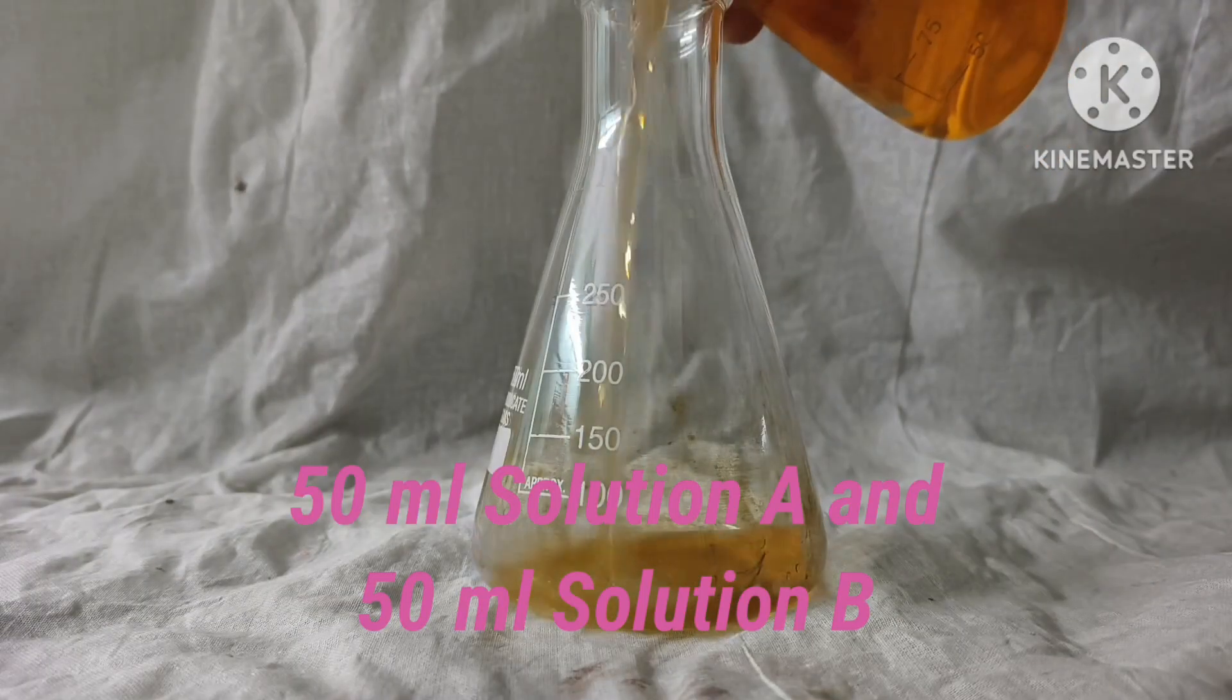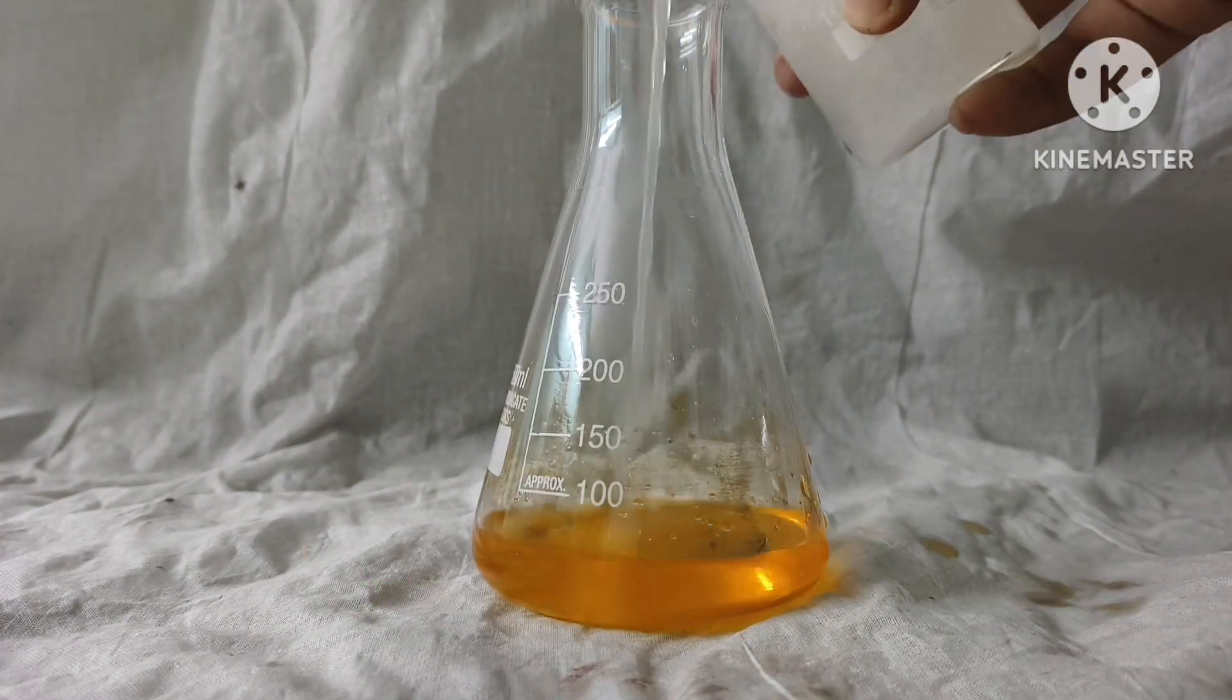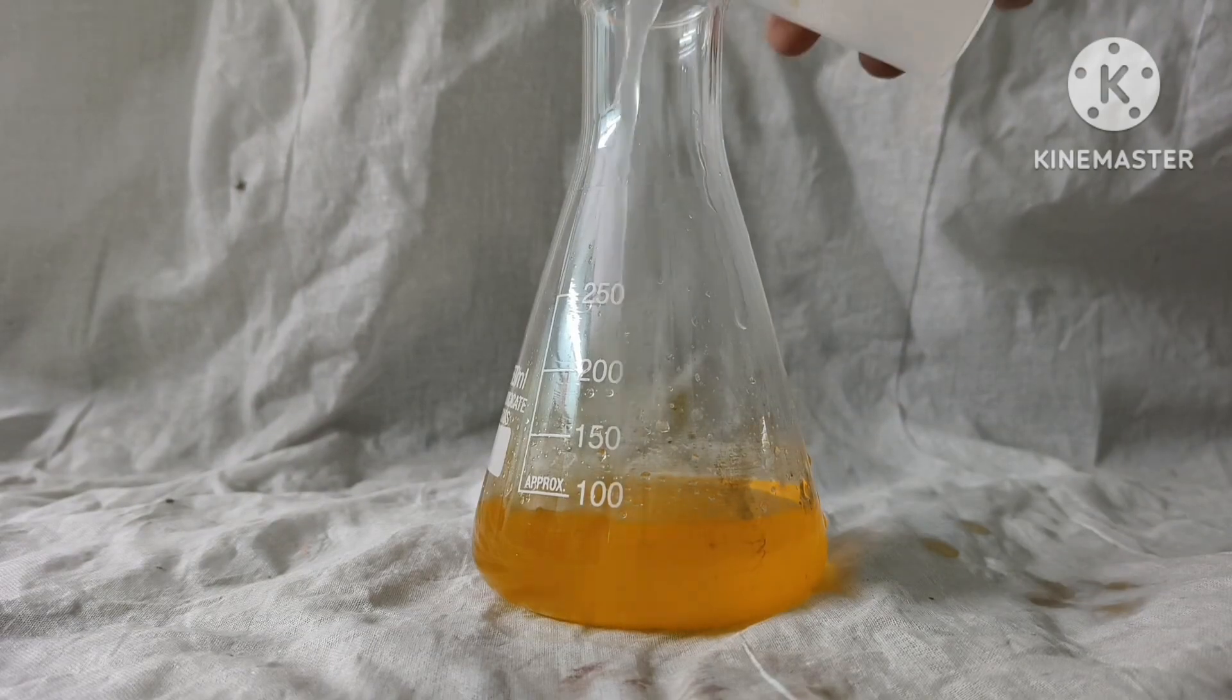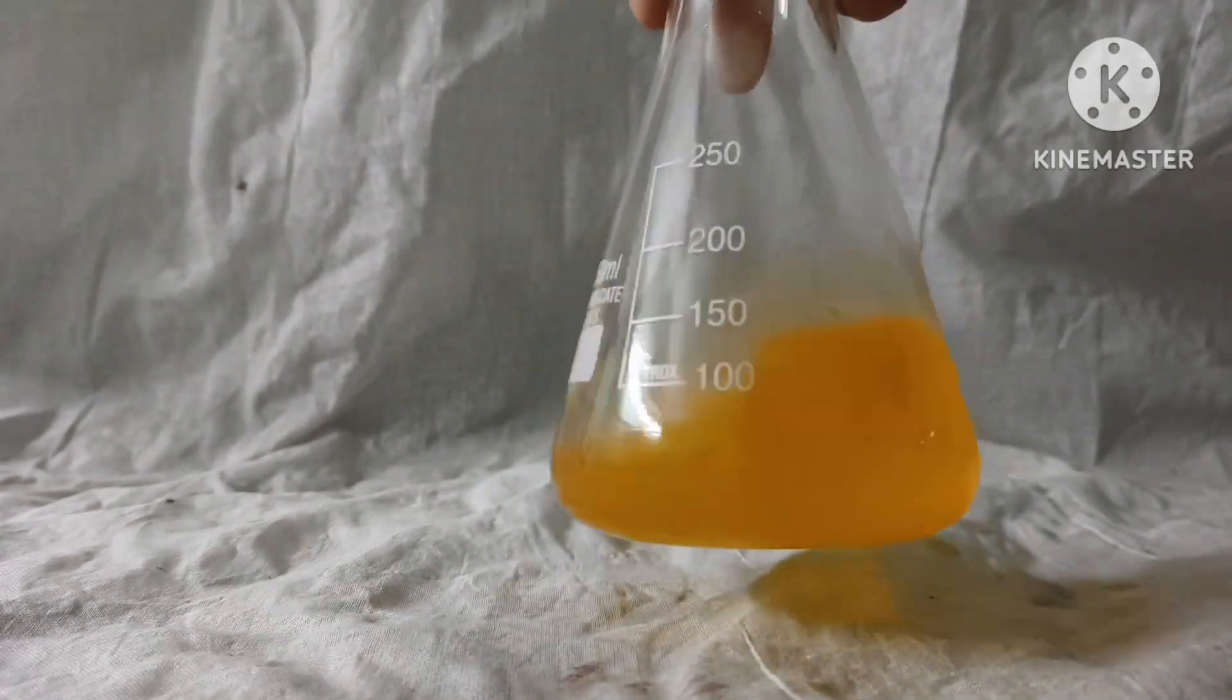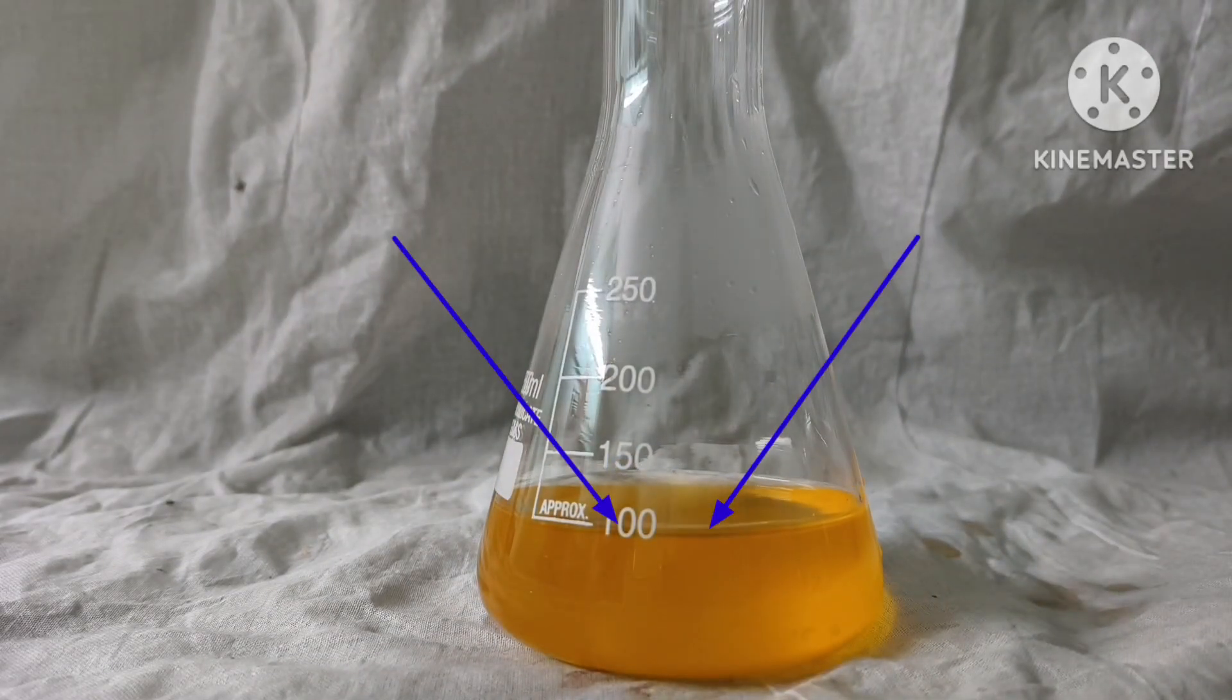I am mixing 50 ml of solution A and 50 ml of solution B in a bigger conical flask. Let the solution stand for a minute and just concentrate on the color of the solution and wait. The color will come.